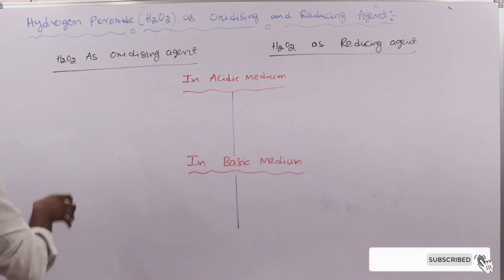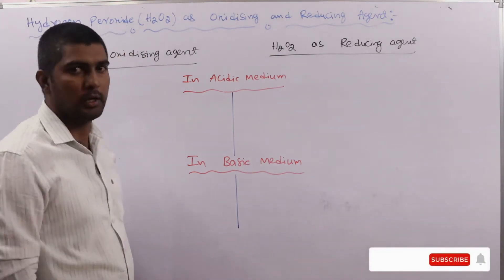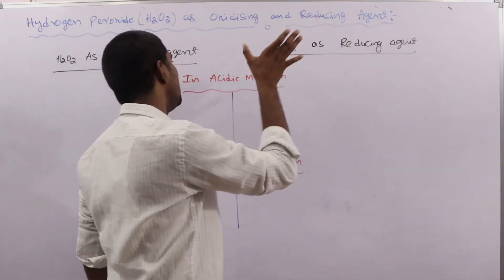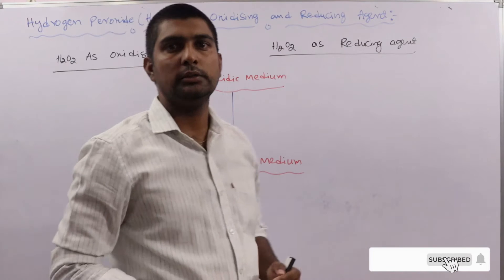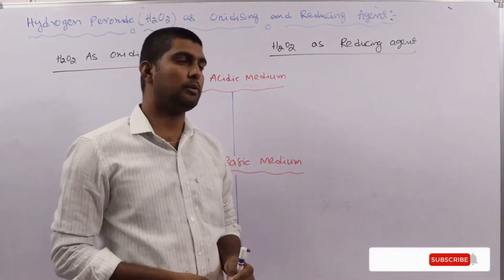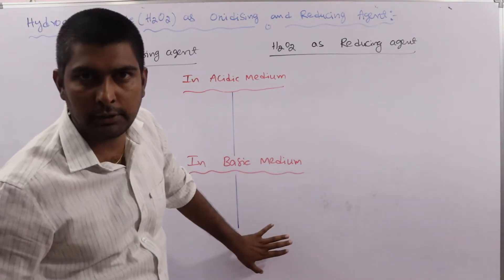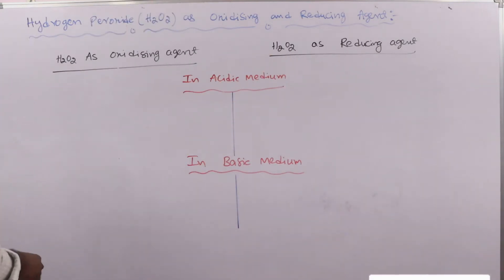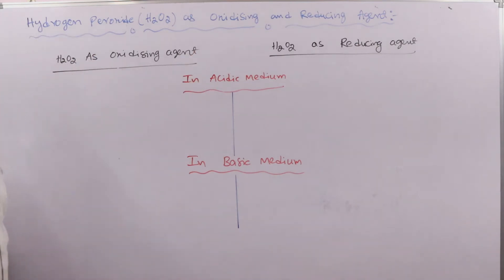H2O2 can act as an oxidizing agent in the acidic medium as well as in the basic medium. And H2O2 can act as a reducing agent in the acidic medium as well as in the basic medium. That's why it is so special — generally some molecules act as oxidizing or reducing agent only in acidic or only in basic medium, but H2O2 works in both. So H2O2 as an oxidizing agent in the acidic medium is very, very important.